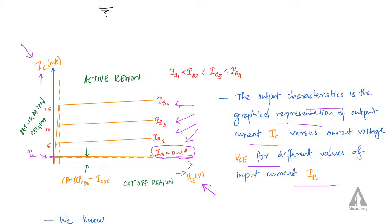When IB equals 0 microamps, there is a small output current IC due to the leakage current. Note that the slope of the graph is not zero — as VCE increases, IC slightly increases as well.